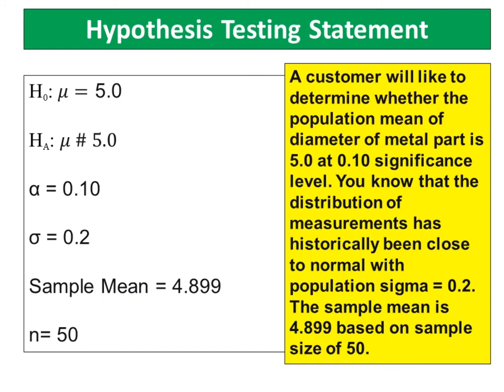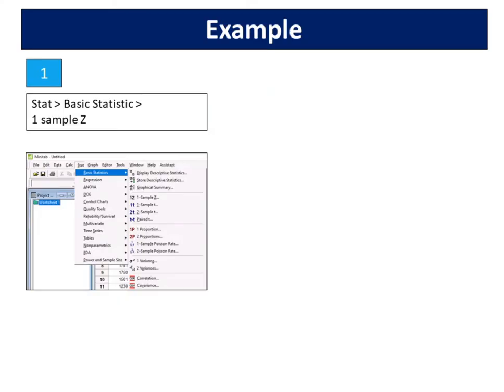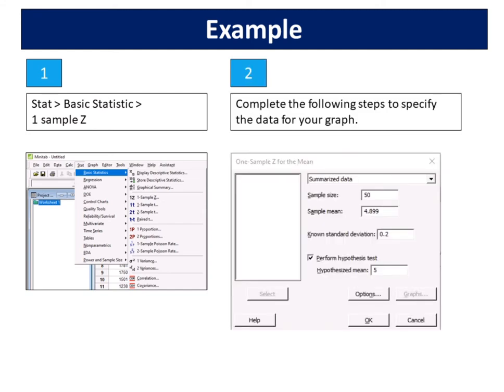Next, I am going to show you the steps to perform a 1 sample Z test to determine whether the population mean differs from 5 using Minitab software. Choose STAT, Basic Statistics, 1 Sample Z. From the drop-down list, select Summarized Data. In sample size, enter 50. In sample mean, enter 4.899. In known standard deviation, enter 0.2.